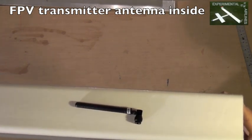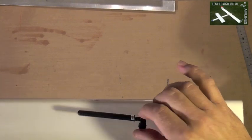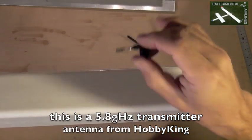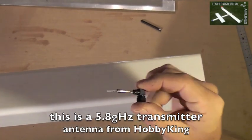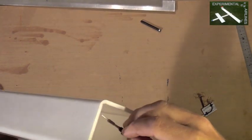If you're building this for FPV using the 5.8 gigahertz system, the stock transmitter antenna comes like this and what's inside is actually a quarter wave dipole antenna that fits nicely vertically inside the fuselage like this.